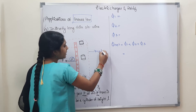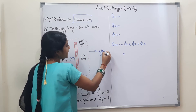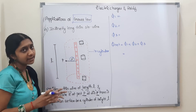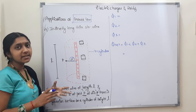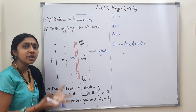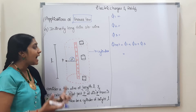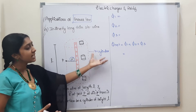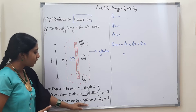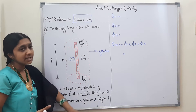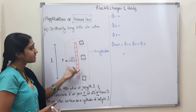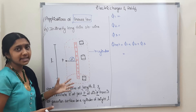Now, how do we calculate the flux? Where do we apply the Gaussian surface? We use a cylinder. When we apply the Gaussian surface, it is in the shape of a cylinder.